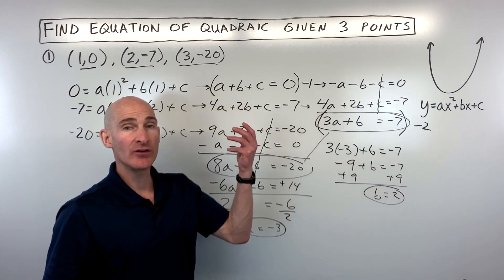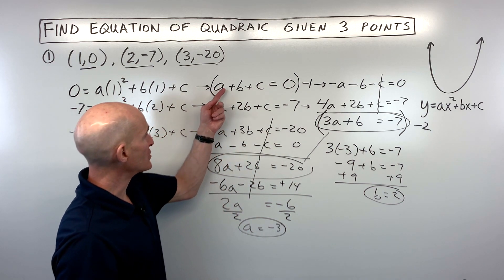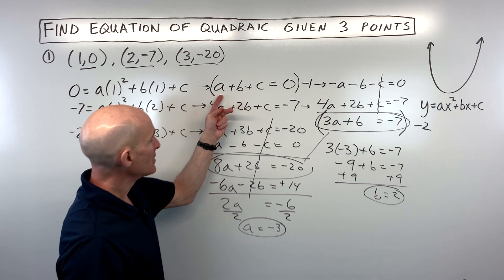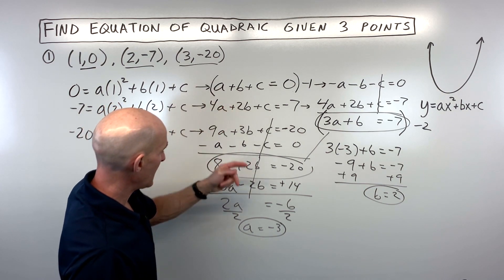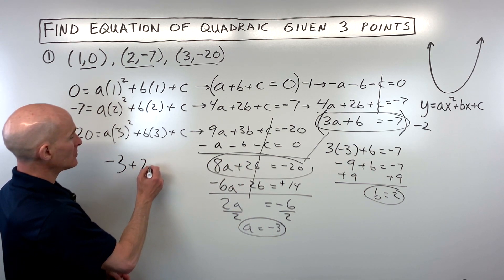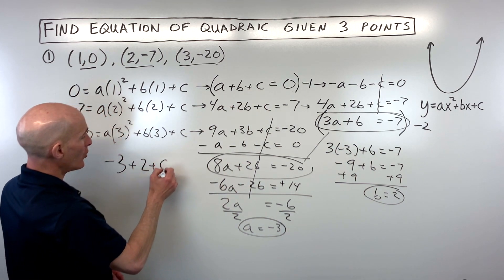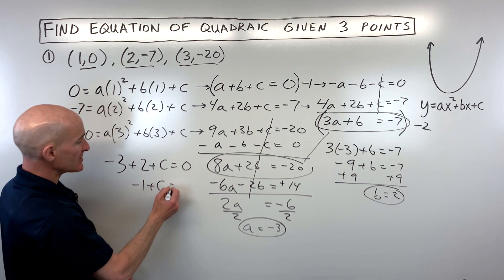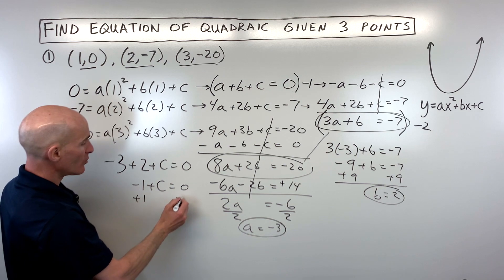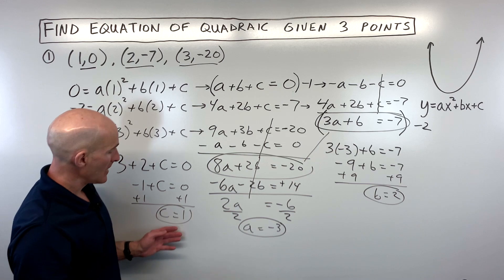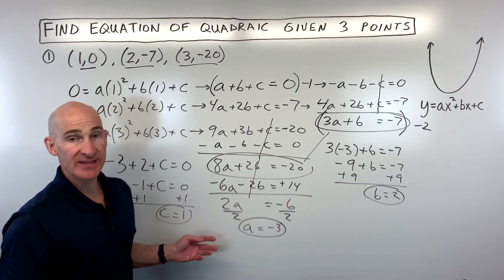So now we have a and b. We want to work back to the three variable equations, one of the original ones. I'll just do this top one right here. So this comes out to, let's see, a which is negative 3 plus b which is 2 plus c which we don't know. And that is going to equal 0. So we have negative 1 plus c equals 0. Add 1 to both sides. And you can see that c is coming out to 1. So now you can see we've got our a, b, and c.